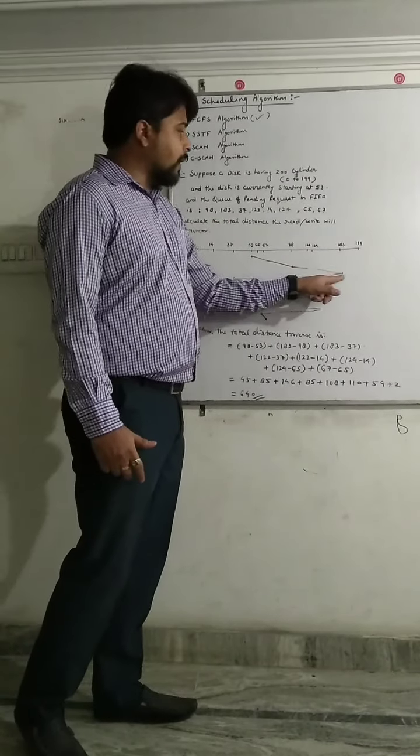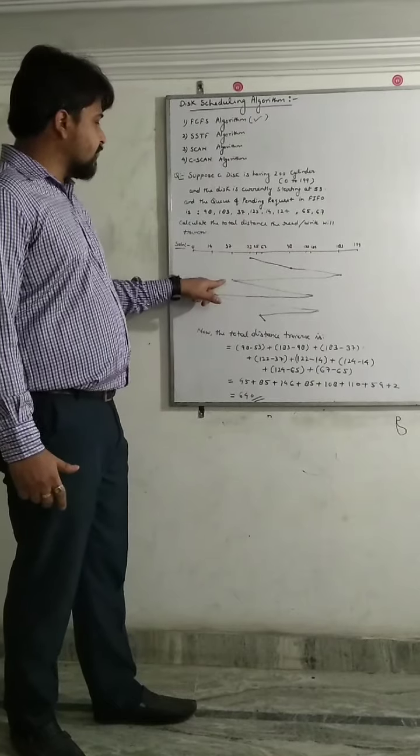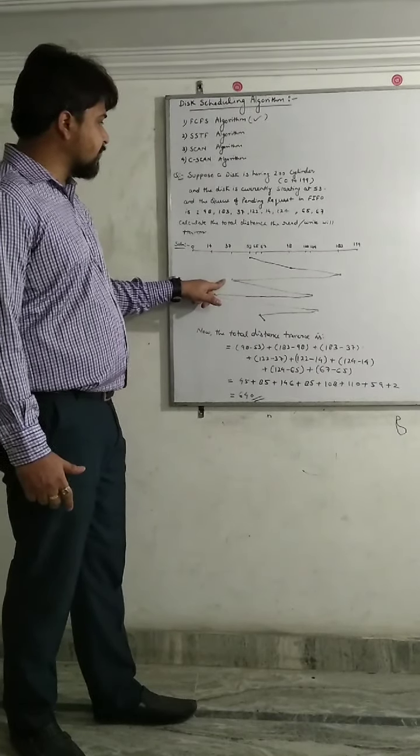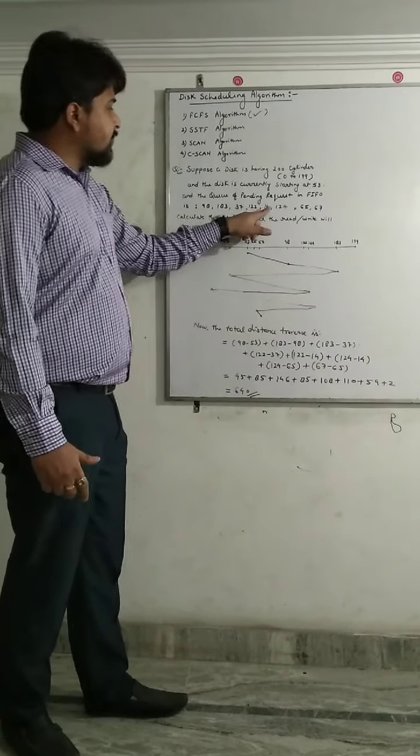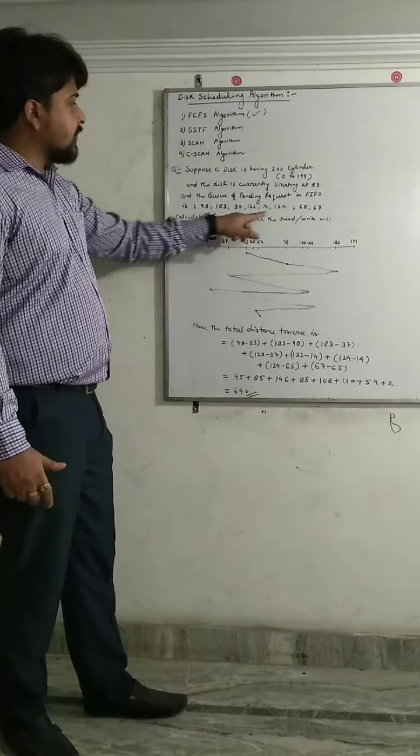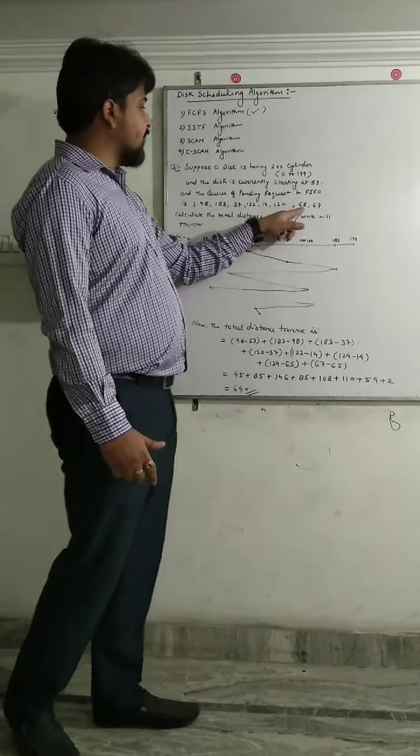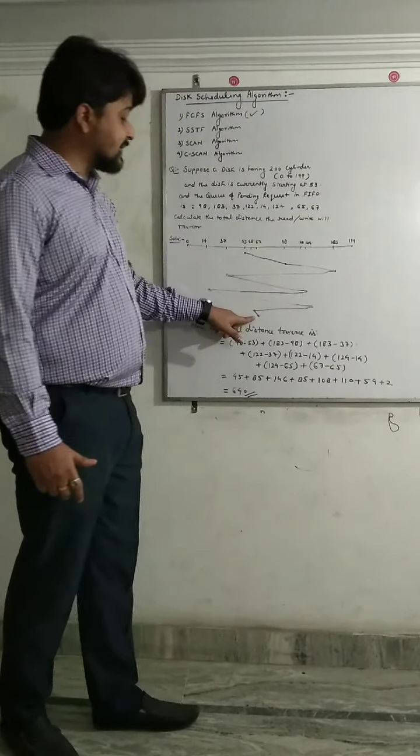Then we move to 183, and the next job is 37. Then we move to 37. Then the next job is 122. Next is 14. Next is 124. Then next is 65. And last is 67.